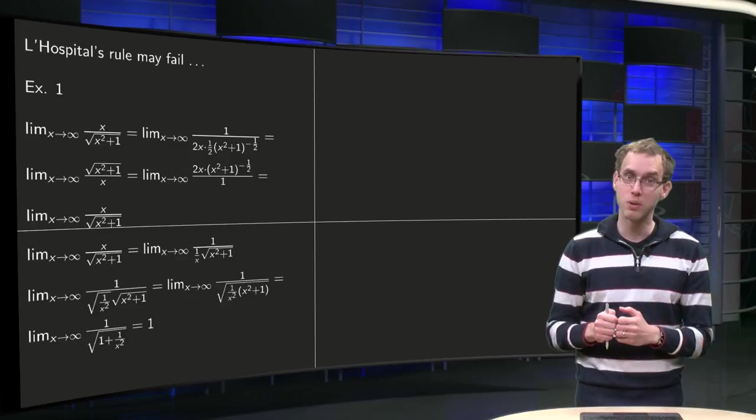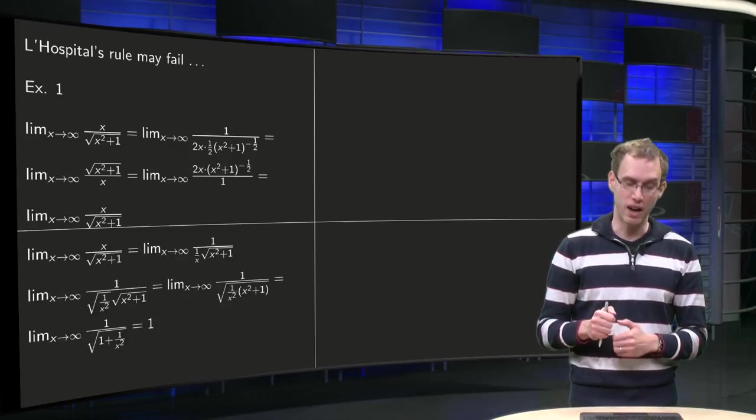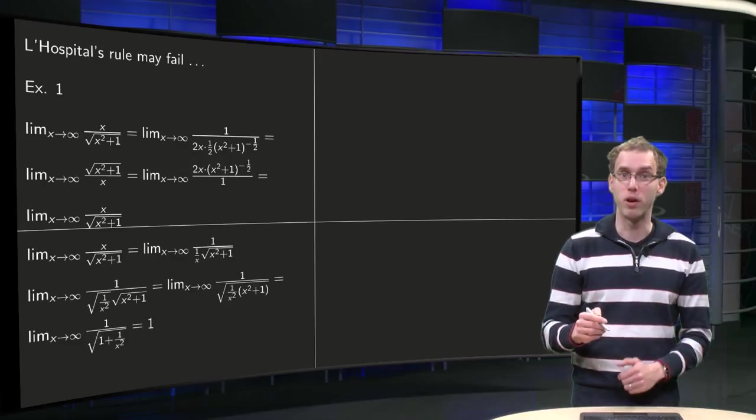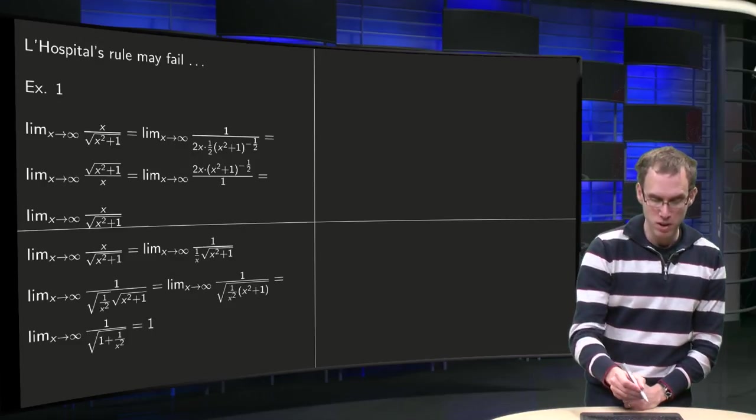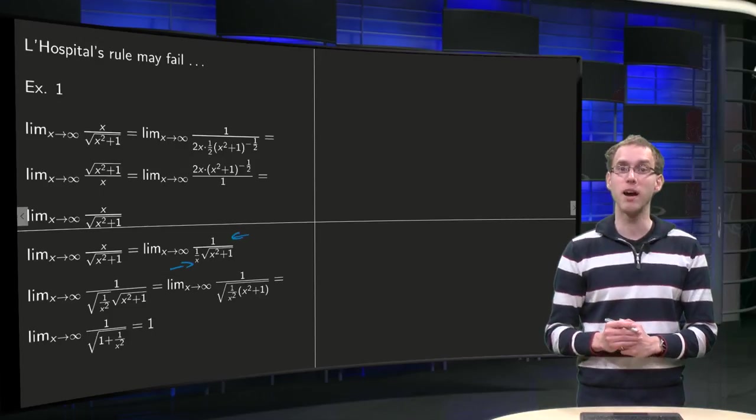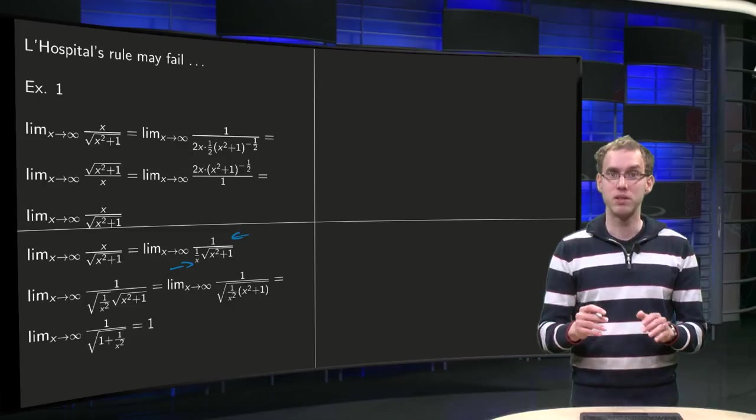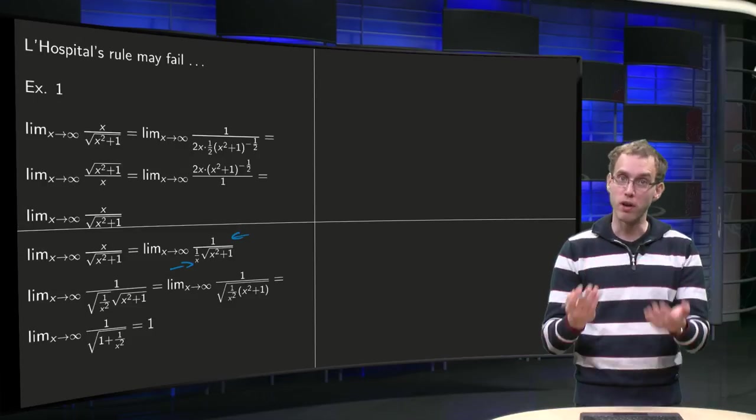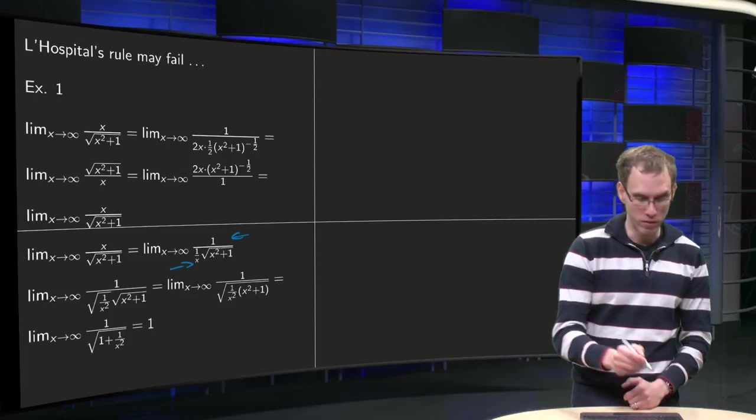So what can we do? Well, we can divide by the highest power. So we multiply by 1 over x, numerator and denominator, so we get 1 in the numerator and 1 over x in the denominator. And then we want to get the 1 over x inside the square root.